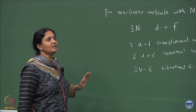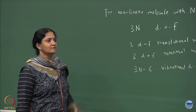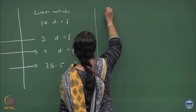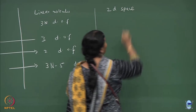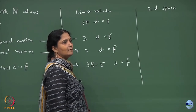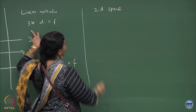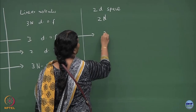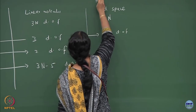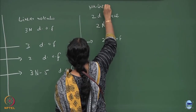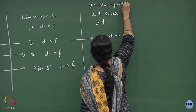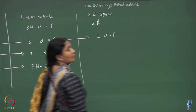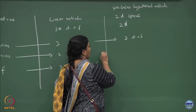Now suppose I tell you that you are in a hypothetical situation where you can move only in the 2-dimensional plane — 2D space. Then 3n becomes 2n, and translational degrees of freedom become 2. For a non-linear hypothetical molecule on a plane, how many rotational degrees of freedom? Just 1 — rotation about a point.